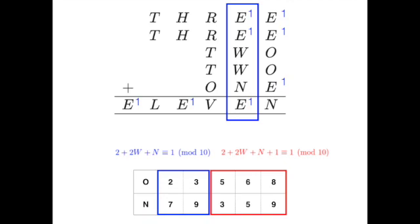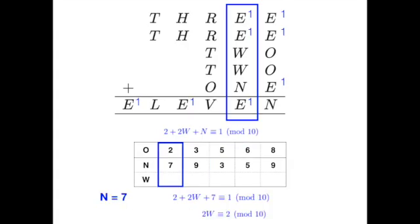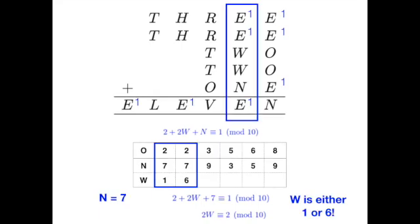With this, we can add another row beneath the table and try to figure out what W could be, based on the previous cases of O and N. For example, when N equals 7, we have 2 plus 2W plus 7 is congruent to 1 modulo 10, upon which simplifying gives 2W is congruent to 2 modulo 10, which just means 2 multiplied with the digit W must have 2 in the units digit. There can only be 2 possibilities for this, either W is 1 or W is 6. Doing the same thing, we can fill up the entire table.